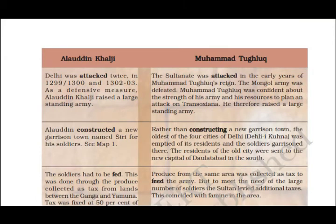Let's compare Alauddin Khalji and Muhammad Tughlaq's approaches. Delhi was attacked in 1299, 1302, and 1303. For defense, Alauddin Khalji built a very large army and constructed a new garrison town called Siri for his soldiers. Muhammad Tughlaq was confident in his army and planned an attack on Transoxiana, raising a large standing army. Rather than building a new garrison town, he evacuated Delhi Kuhna and stationed soldiers there, sending the original residents to Daulatabad in the south.